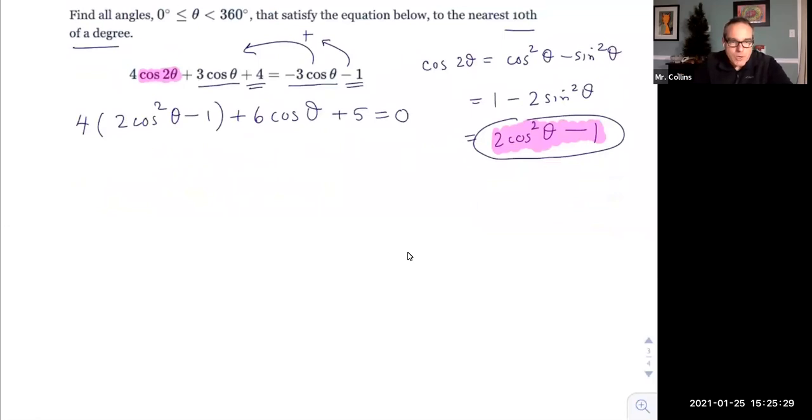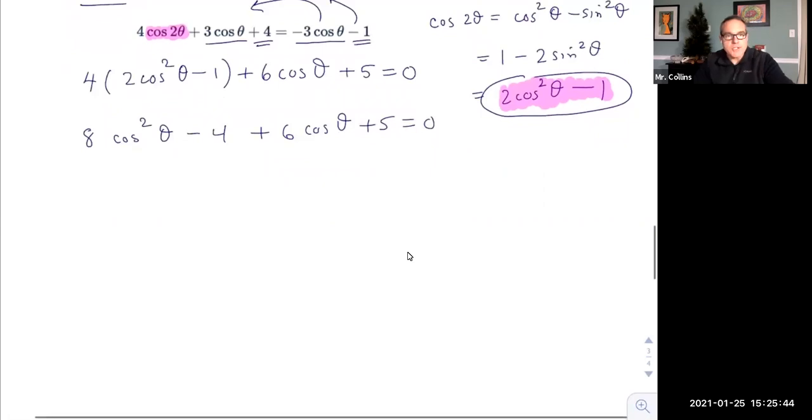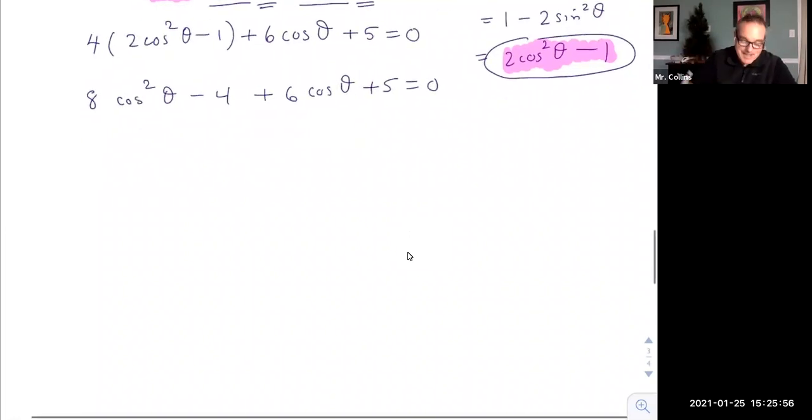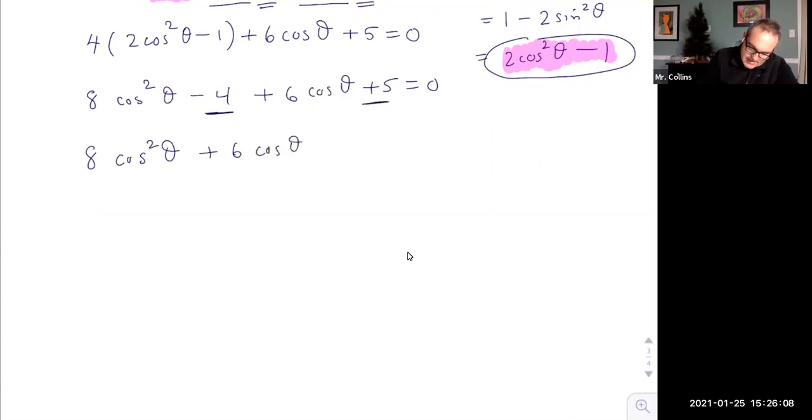Looks a little bit better, but still we got work to do. We should probably distribute that four and get eight cosine squared theta minus four plus six cosine theta plus five equals zero. And if you notice, it looks like I have a quadratic function, but it's quadratic in cosine theta. This whole thing looks like a second degree, but instead of x's, I have cosine theta. So again, I want to set it to zero and put stuff in the descending order, just like I would a quadratic. So the next term would be the six cosine theta. And then I can collect these constant terms minus four plus five is a plus one.